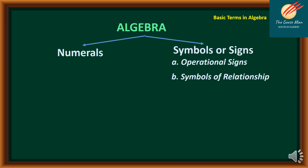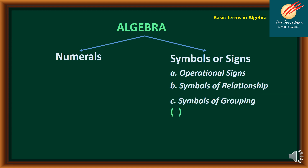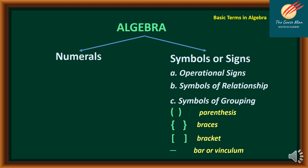For the symbols of relationship, we have the equal sign, not equal, less than, greater than, less than or equal to, and greater than or equal to. For the symbols of groupings, we have the parenthesis, braces, bracket, and the bar or vinculum, which signifies division or quotient.